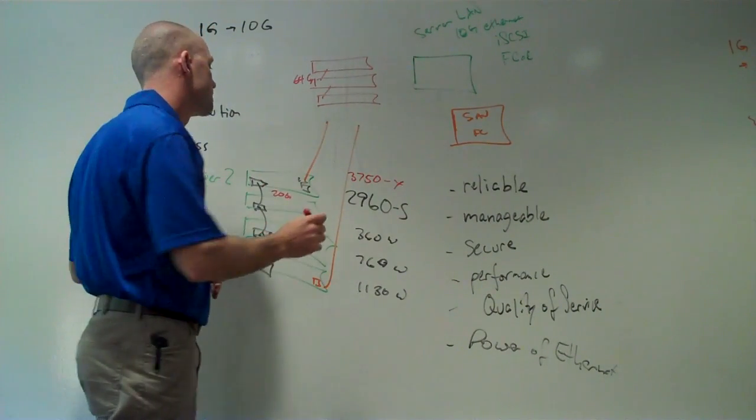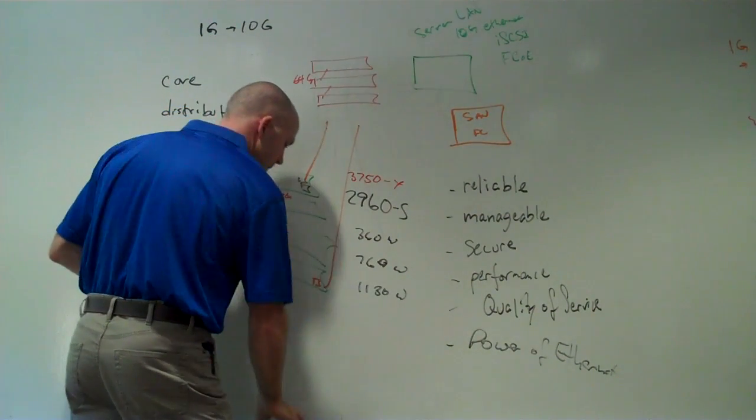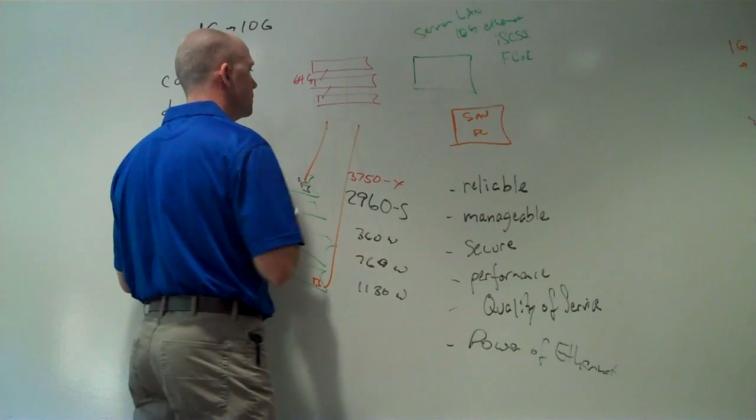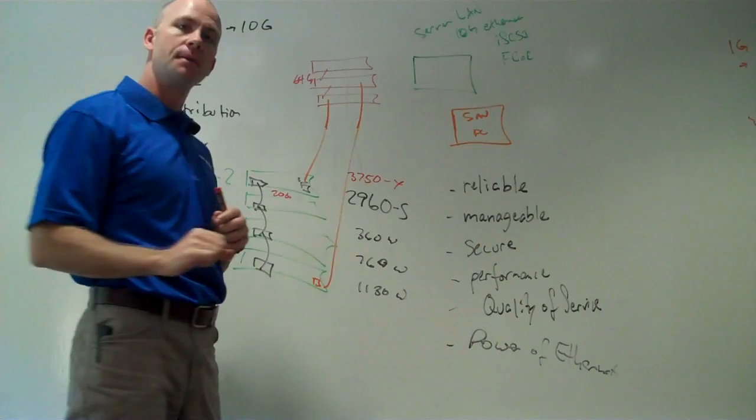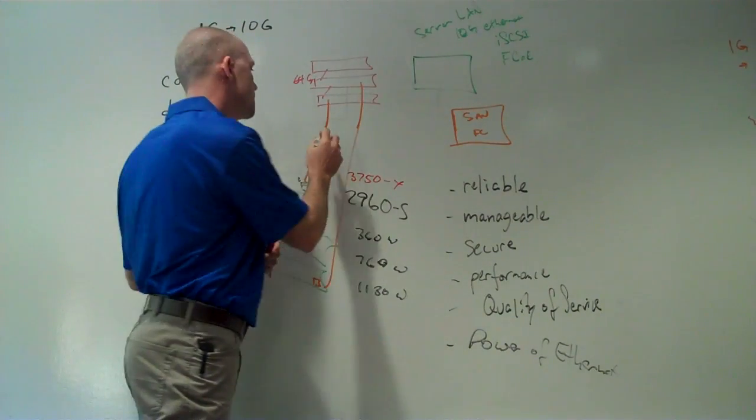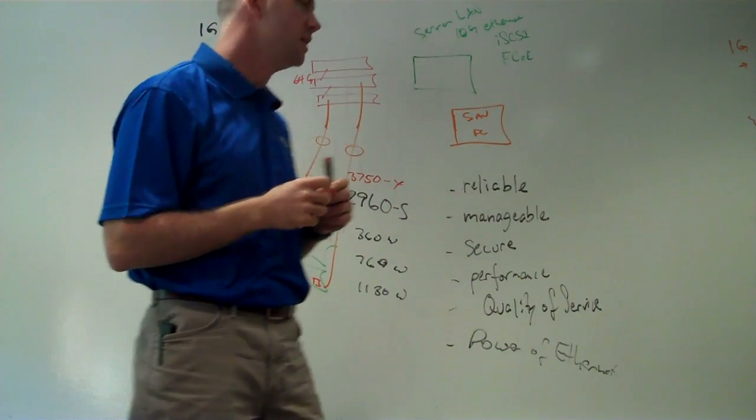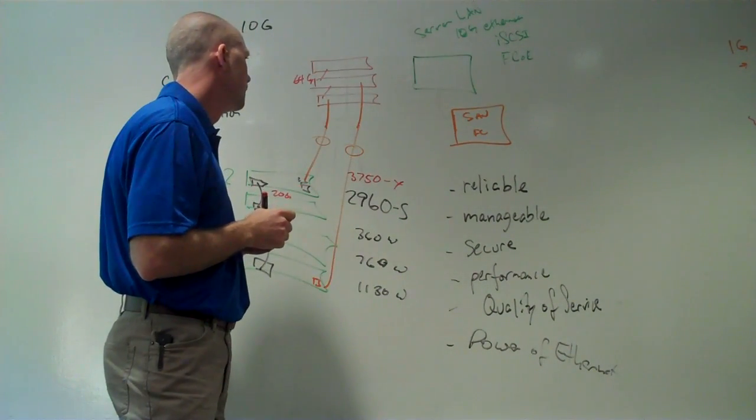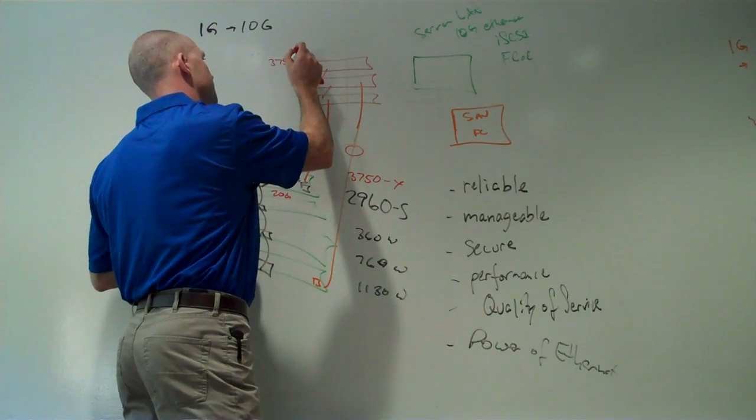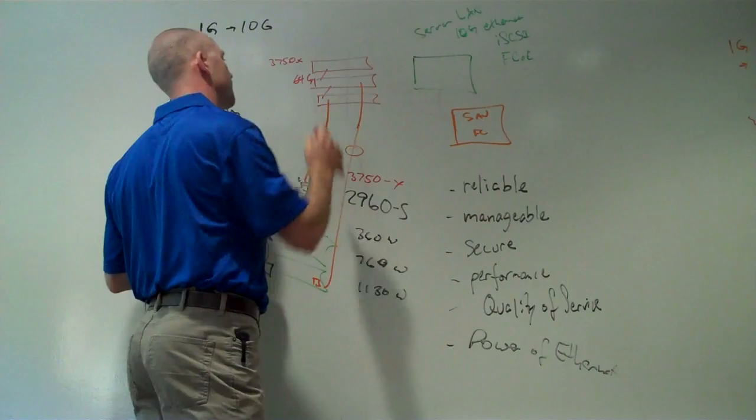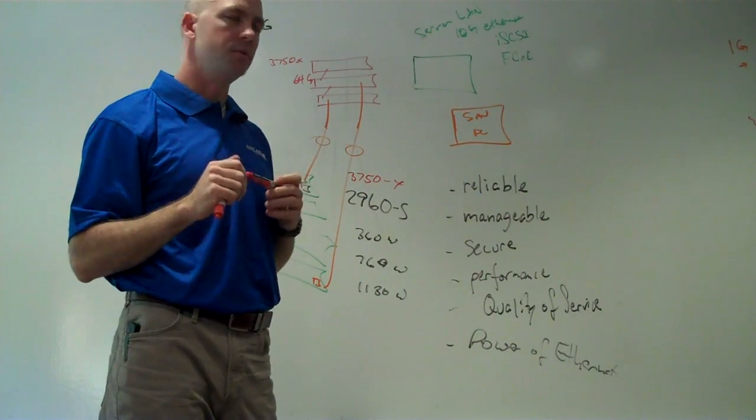But the great thing about stacking these switches together is if you uplink the closets to two different switches, because they're being managed as a single switch, we can set up port channeling. And by doing port channeling, we get full utilization of both of the 10-gig Ethernet legs. So a 3750X stack is good for aggregation or distribution or for a small core distribution switch.